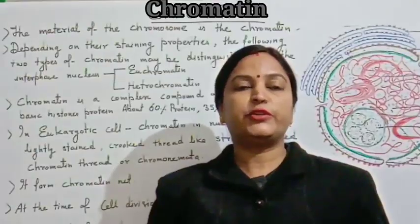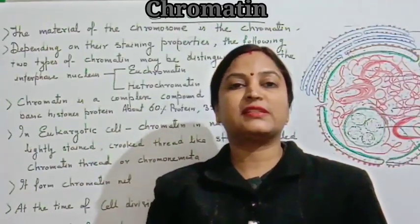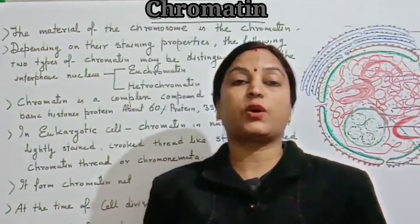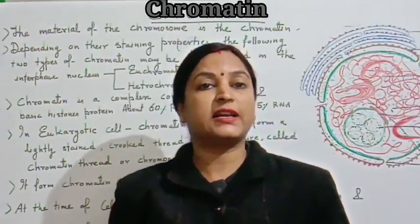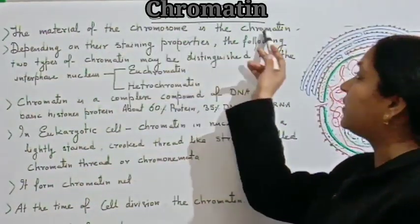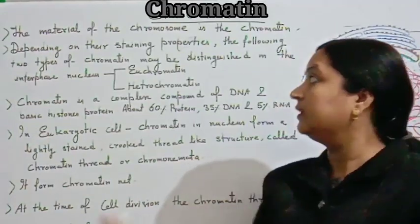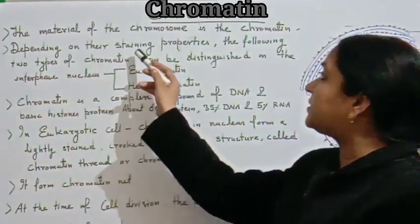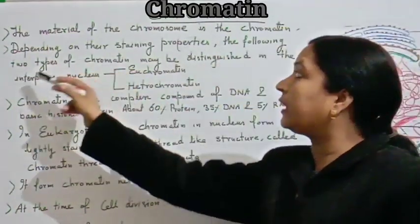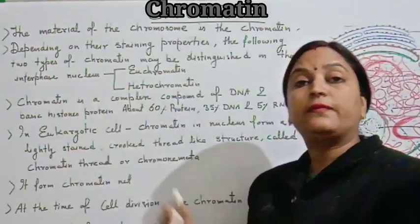Hello everyone, welcome to the YouTube channel. We studied nucleus in the last topic and today's topic is chromatin. First of all, we will know what chromatin is. The material of the chromosome is the chromatin, depending on their staining property. If we stain it, the two types of chromatin may be distinguished in the interphase nucleus.